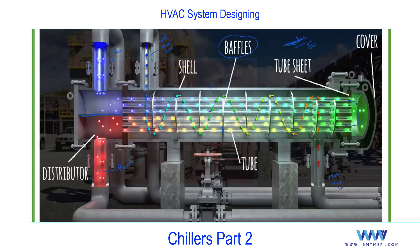We also have the flooded-type shell and tube evaporator, where the arrangement is reversed and is used for higher capacity. But most commonly in air-cooled and water-cooled chillers — except for higher capacities — water is in the shell and refrigerant is in the tube. This shell and tube heat exchanger can be used for both condenser and evaporator, and we'll see both in air-cooled and water-cooled chillers.